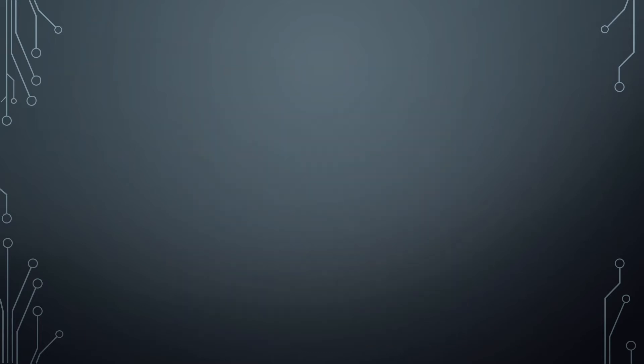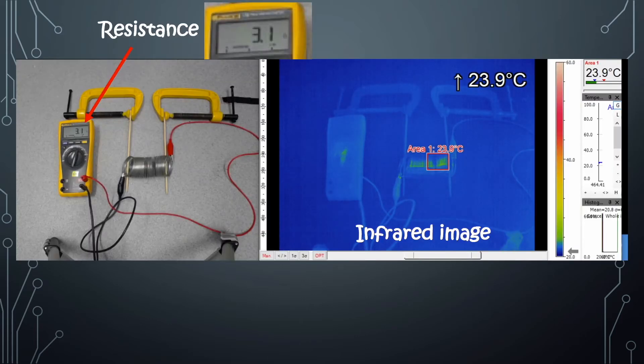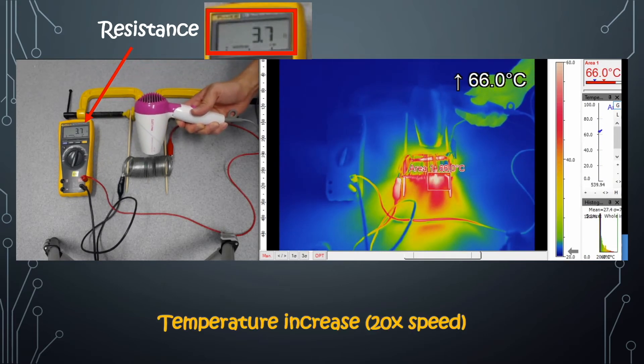So you may ask, is the resistance of a given wire constant? Let's see this experiment with a coil of wire connected to a multimeter, and the resistance is 3.1 ohms. When we heat up the wire, the resistance increases.